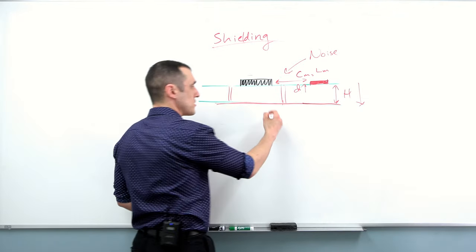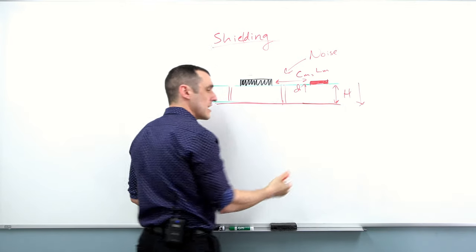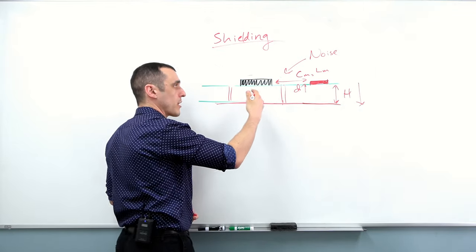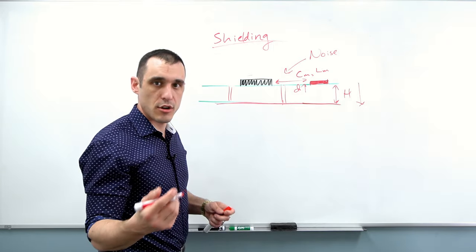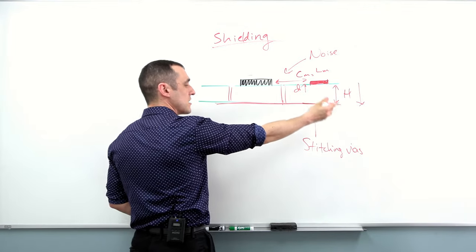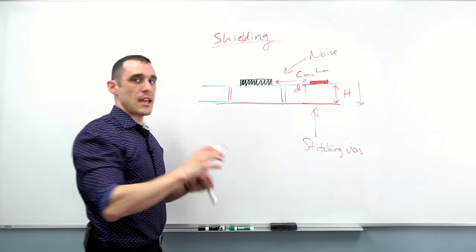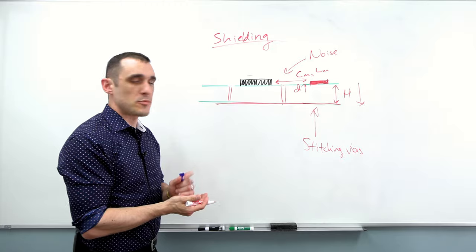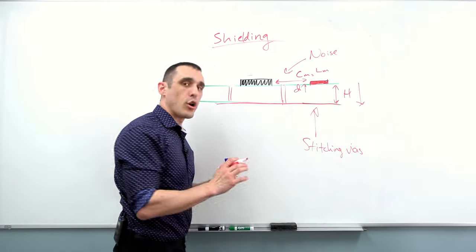Now let's suppose that the noise source is at a specific frequency — maybe instead of a power regulator it's some analog circuit and the analog signal is harmonic, operating at a single frequency. What you could do is put stitching vias around this circuit. Putting stitching vias around this trace is effective if the vias are sized properly.